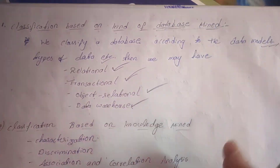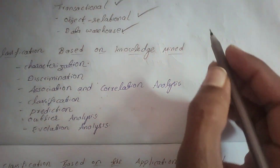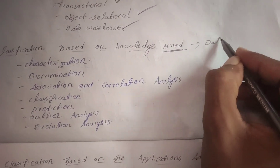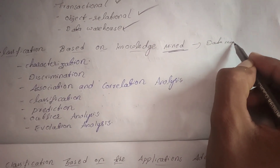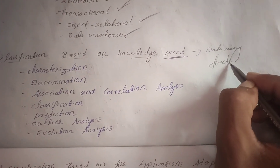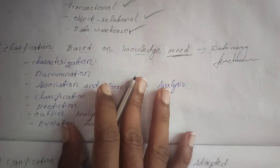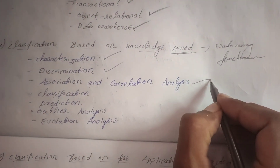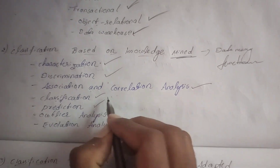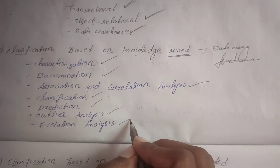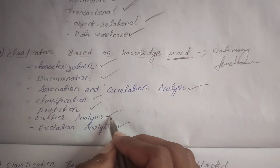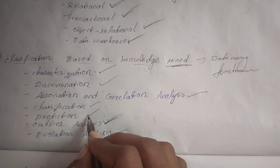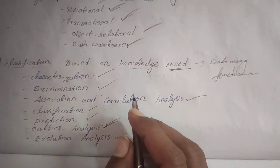The next classification is based on knowledge mined. It can be classified based on data mining functionalities, which include: characterization, discrimination, association and correlation analysis, classification, prediction, outlier analysis, and evaluation analysis.